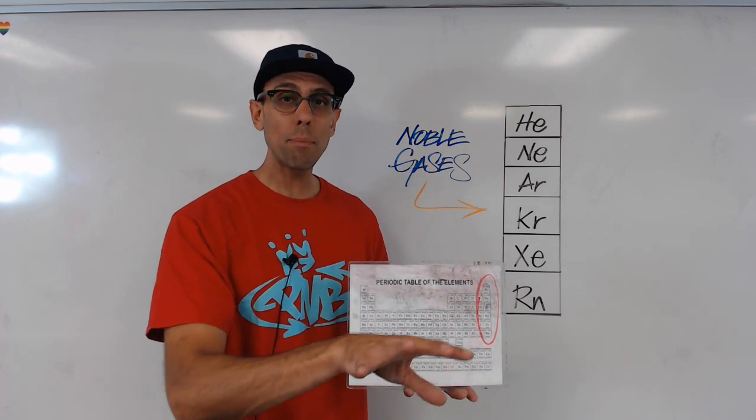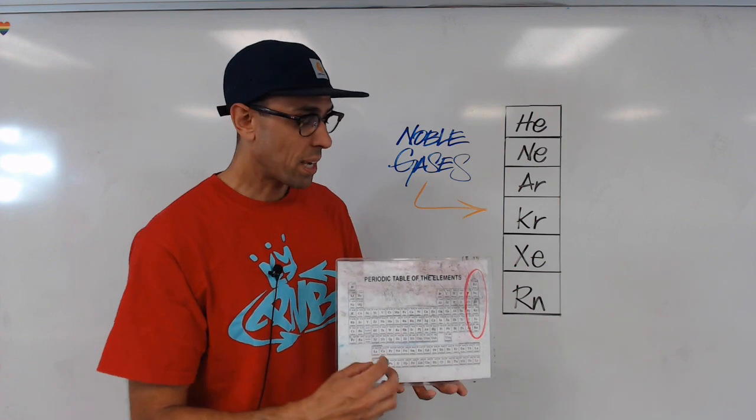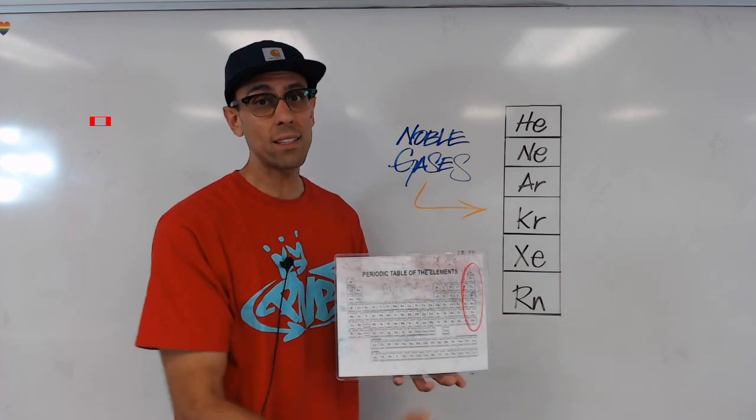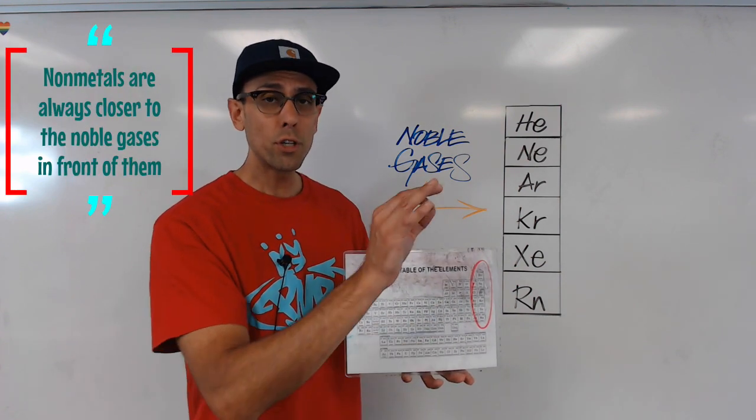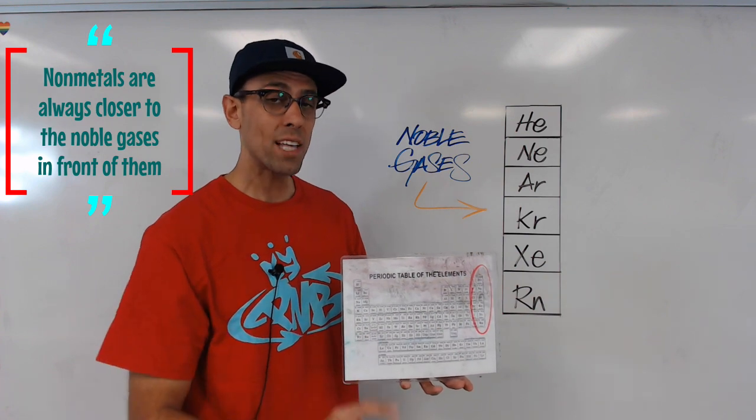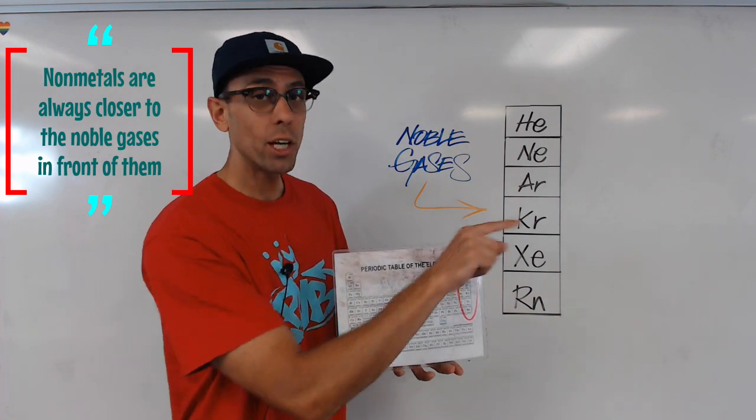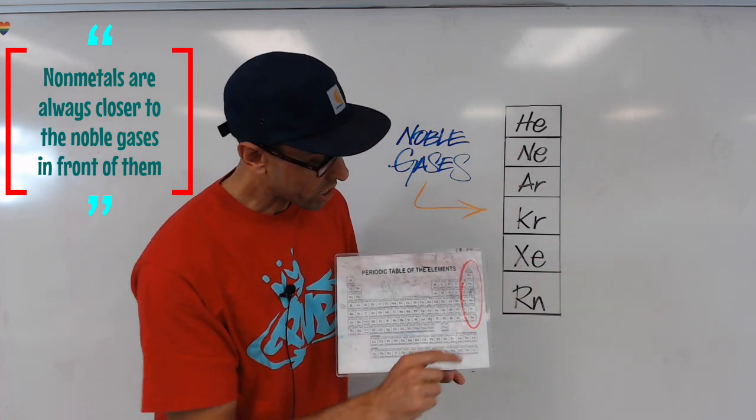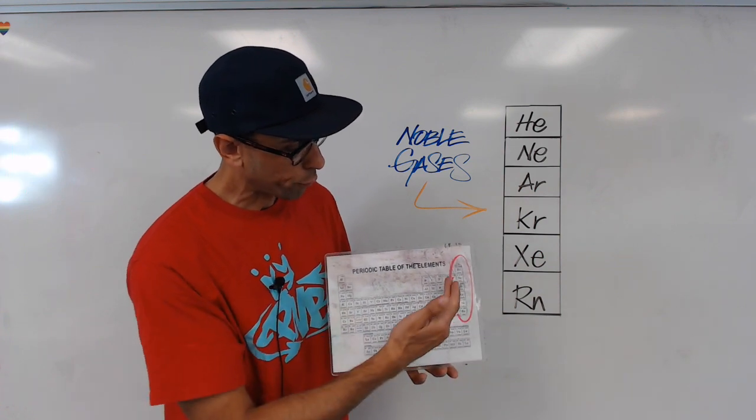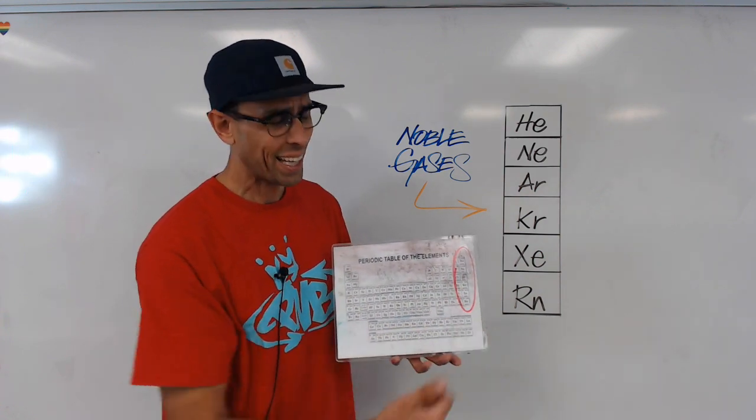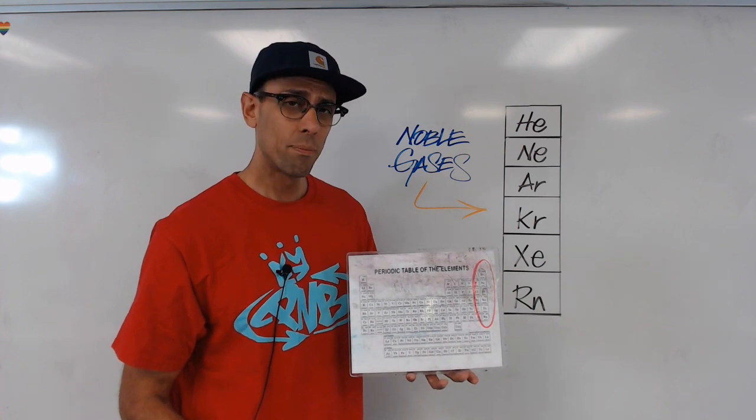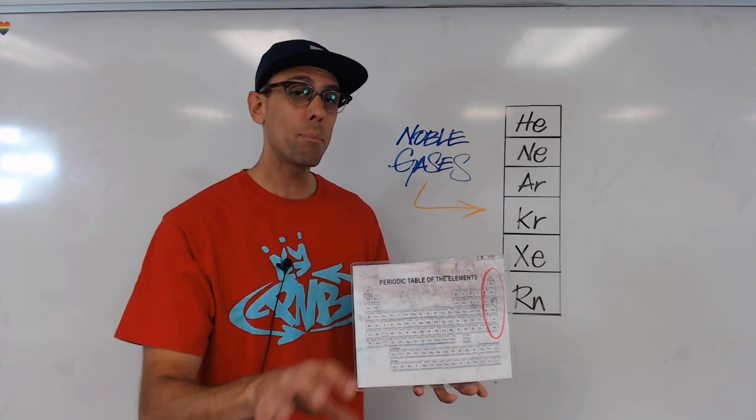Now, for the non-metals, it's totally different, because they're located on the right-hand side of the periodic table. The shortest path to a noble gas for those will always be going forward. So, just like with bromine, we said it was krypton. For chlorine, it would be argon. For iodine, it would be xenon. So, I also have a saying for the non-metals. I call them nons.